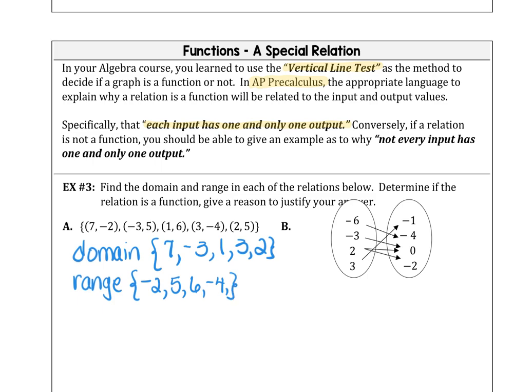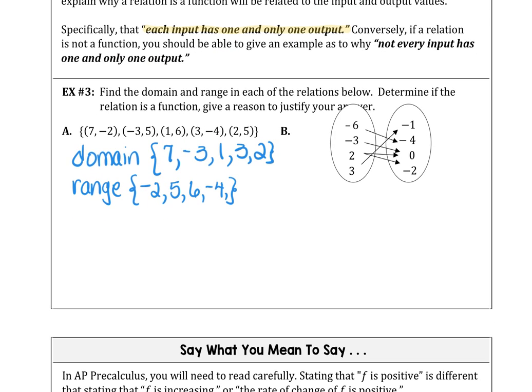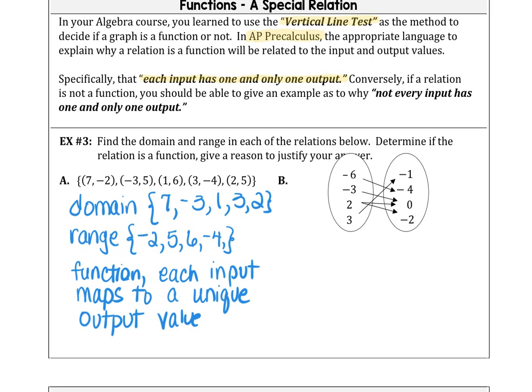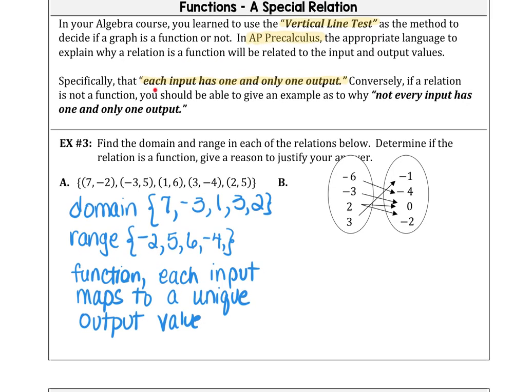Is the relation a function? Yes, we can say the relation is a function. And we can justify that statement by saying each input maps to a unique output value. We can also state the same as in our notes here highlighted, that each input value has one and only one output value.